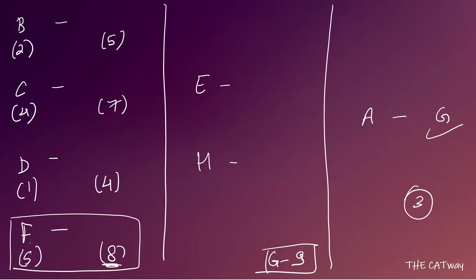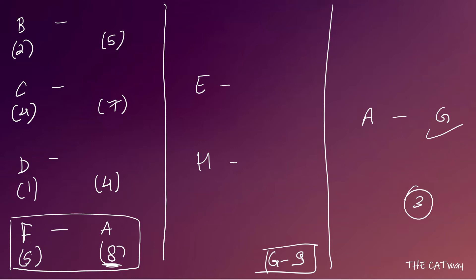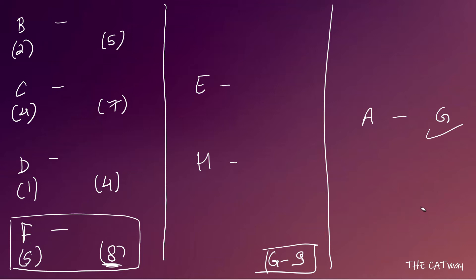We target the match where the winner scored 8 goals — the highest score. The only teams that could score 8 goals in a single match are A, G, or H, since no other team even scored 8 goals in the entire tournament. Testing A: if A scored all 8 goals against F in the quarter-final, A would score zero goals in the semi-final and could not reach the finals — so A is eliminated.